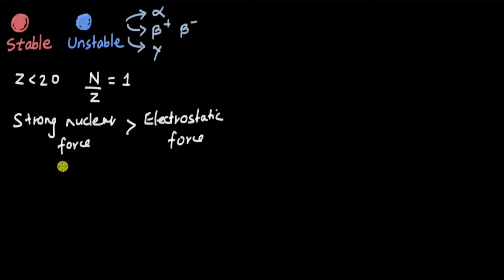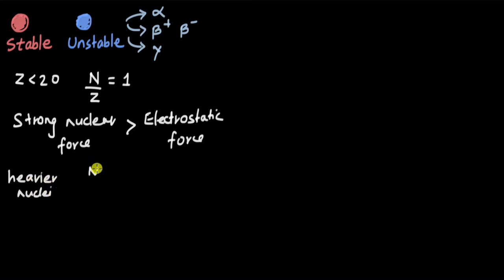For heavier nuclei with a very high atomic number, the ratio n/z does not remain 1 — it changes. For these heavy nuclei, the ratio turns out to be equal to 1.5, meaning there are more neutrons than protons in the nucleus.